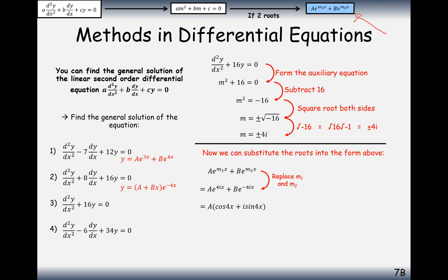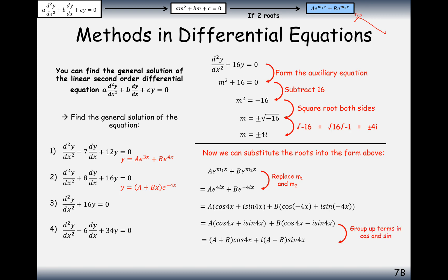Using trigonometric rules for negative angles — cos(−4x) equals cos(4x) and sin(−4x) equals −sin(4x) — we rewrite and collect terms. cos(4x) appears twice so we factorise out (A plus B), and for sin(4x) we get (A minus B) times i. Since A plus B and (A minus B)·i are just numbers, we relabel them p and q respectively.